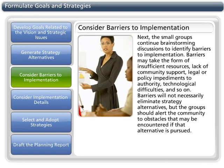Next, the small groups continue brainstorming discussions to identify barriers to implementation. Barriers may take the form of insufficient resources, lack of community support, legal or policy impediments to authority, technological difficulties, and so on. Barriers will not necessarily eliminate strategy alternatives, but the group should alert the community to obstacles that may be encountered if that alternative is pursued.